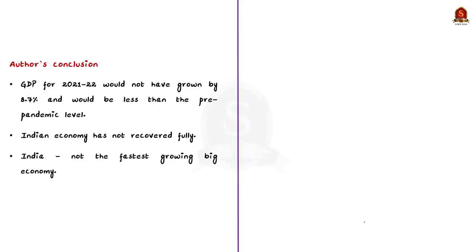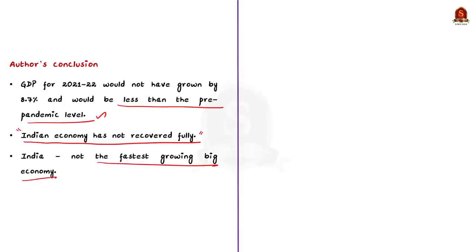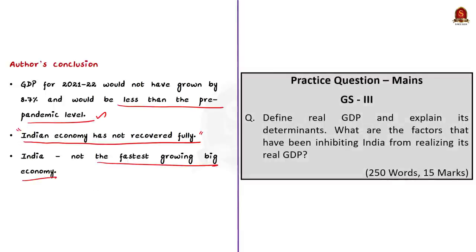Based on all these reasons, the author concludes that GDP for 2021-22 would not have grown by 8.7% and would be less than the pre-pandemic level. This means the Indian economy has not recovered fully and is definitely not the fastest growing big economy. In this editorial, we understood GDP, real vs. nominal GDP, and the key points raised by the author.